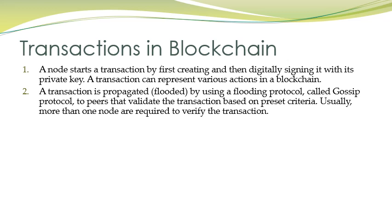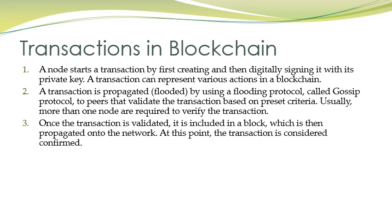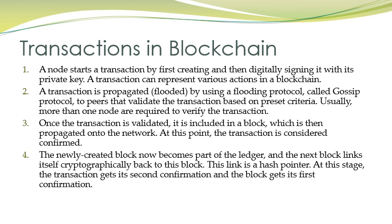In Bitcoin technology, nodes are sometimes called miners. Miners validate and verify transactions — usually more than one node is required. Once a transaction is validated it is included in a block, which is then propagated onto the network; at this point the transaction is considered confirmed. The newly created block becomes part of the ledger, and the next block will link to this block via a hash pointer. At this stage the transaction gets its second confirmation and the block gets its first confirmation.